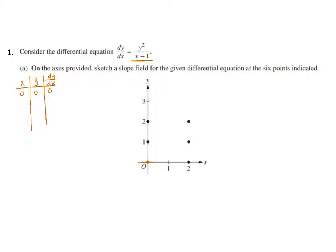Now I'm going to move on to the point (2, 0). When I substitute in, I'm going to have 0 over 1, so that is going to give me 0. And again, I'm just going to do a short segment through that point.